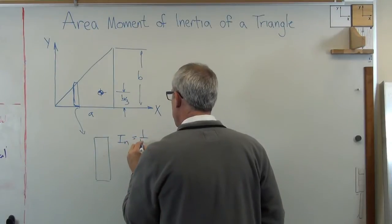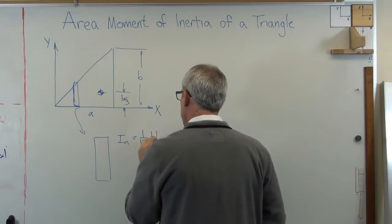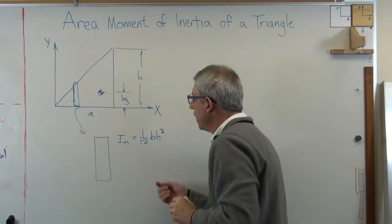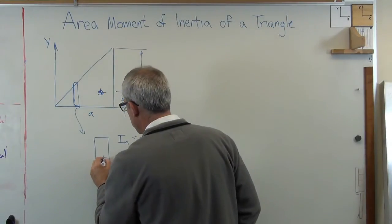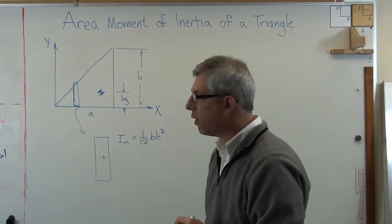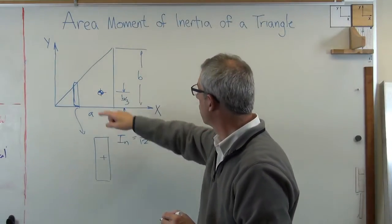The area moment of inertia of that slice is one-twelfth bh cubed, right? Well, that's the area moment of inertia of the slice about its centroid, which is in the middle. That's not where I want. I want about B over 3.